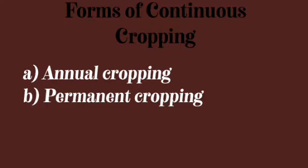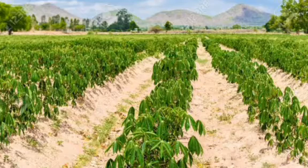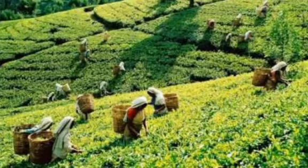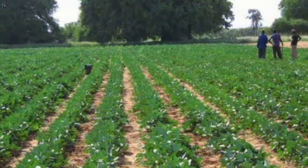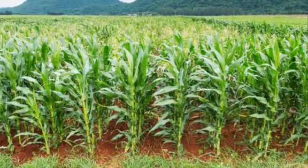The first form is annual cropping, where food crops or arable crops such as cassava, groundnut, maize, millet, sorghum, and yam are grown on the farmland. When they mature they are harvested, and the farmland is cultivated again with such crops. The principle is that only arable crops are cultivated year after year. Arable crops have a short life span — when they grow and mature, the farmer harvests them and grows the same type of crops again.